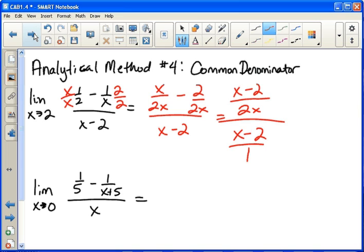So then, hopefully it is clear that the x minus two's will cancel, leaving you just one over two x. And if you plug in two, your answer will be one fourth.